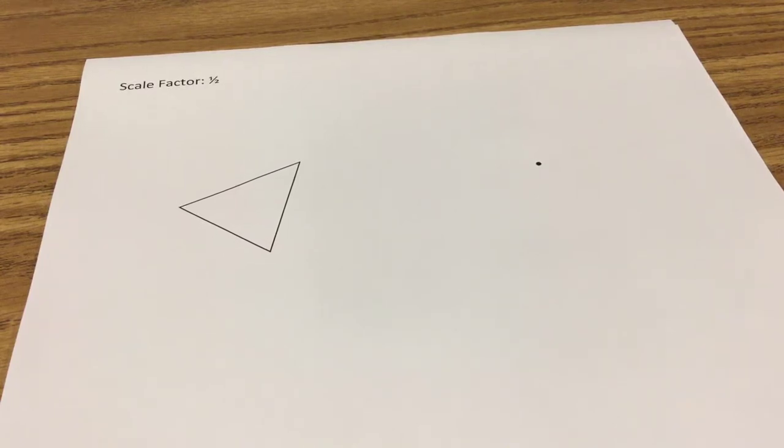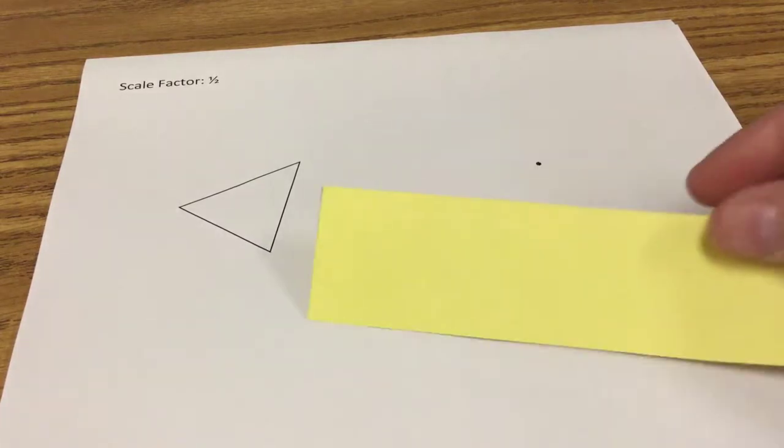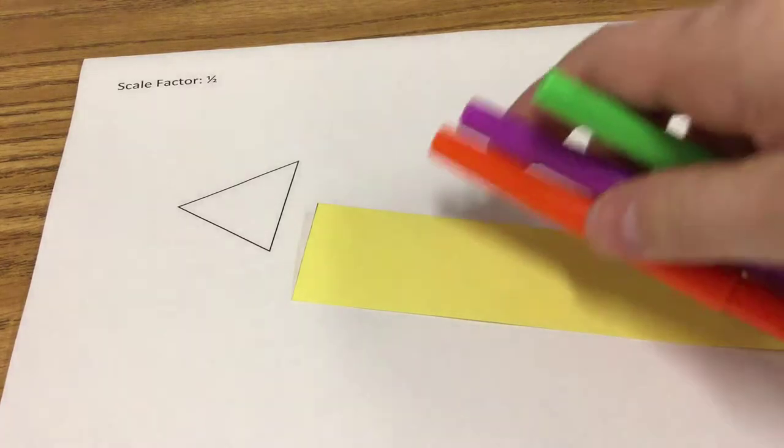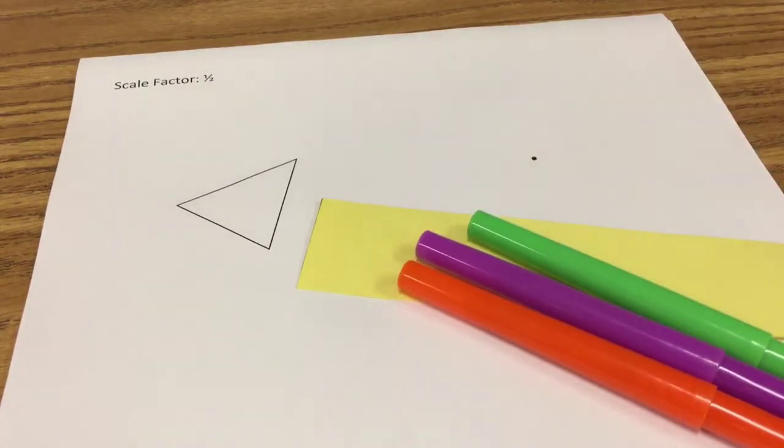So supplies that you will need: you'll need a straight edge, here we have a simple piece of paper, and some colored pens. One color for each vertex would be great.